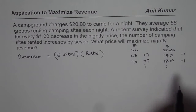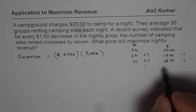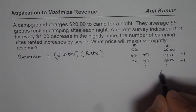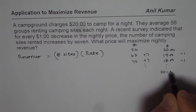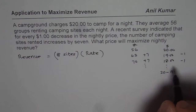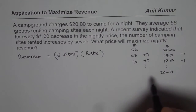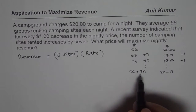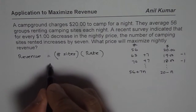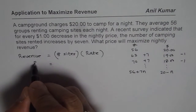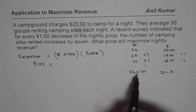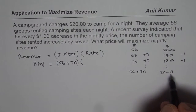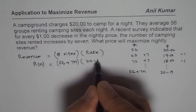If you observe this pattern, if there are n dollars decrease — if we do it n times — then the charges will be 20 minus n. In that case, 7 times n will be the increase in renting sites, so it will be 56 plus 7n. So in general, the revenue will be the product of these two: (56 + 7n) and (20 − n).